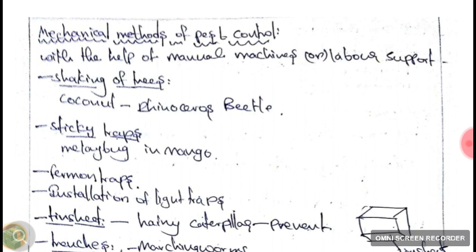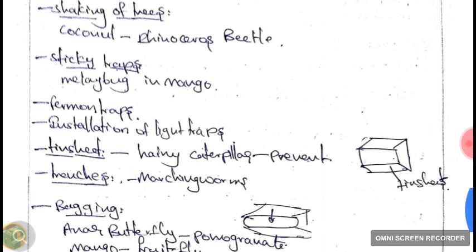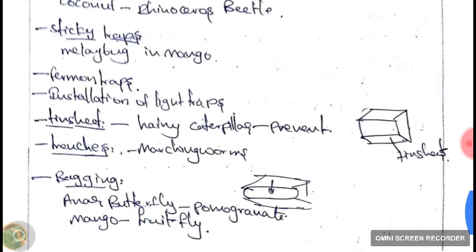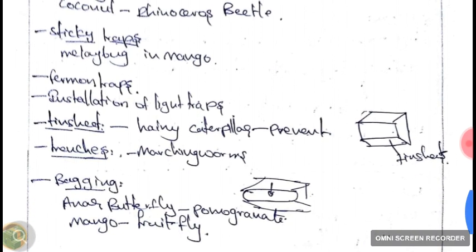The next one is pheromone traps. Insects are attracted towards pheromones, and they will die in the trap. Next is the installation of light traps — though the light trap itself comes under the physical method of pest control, its installation comes under the mechanical method.